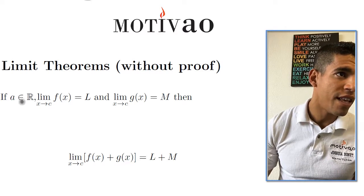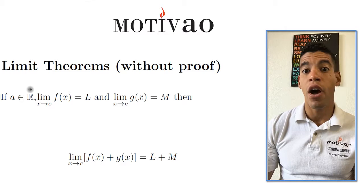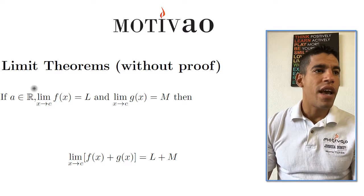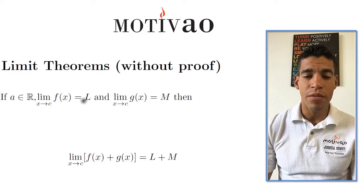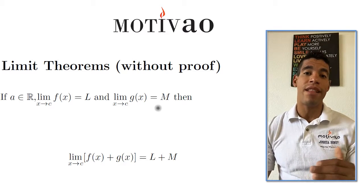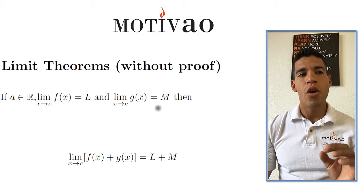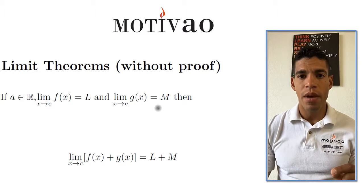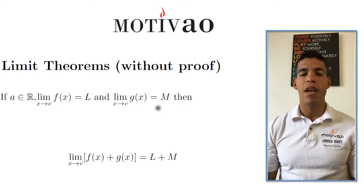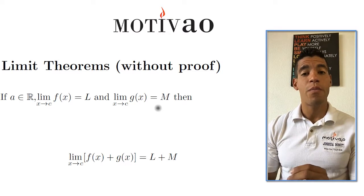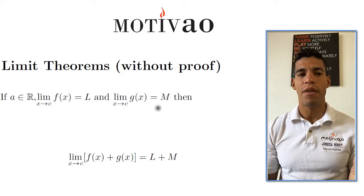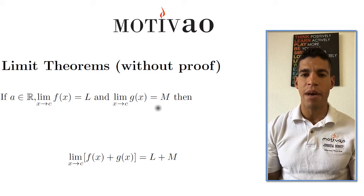So, if a is an element of the real numbers — that symbol means 'in' or 'belonging to' — therefore a is a constant. And then: the limit as x approaches c of f(x) is equal to L, and the limit as x approaches c of g(x) is equal to M. Both functions have to approach the same value of x — that's very important. They both approach c, but L and M can be different real numbers.